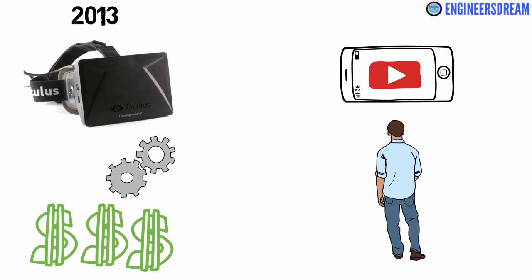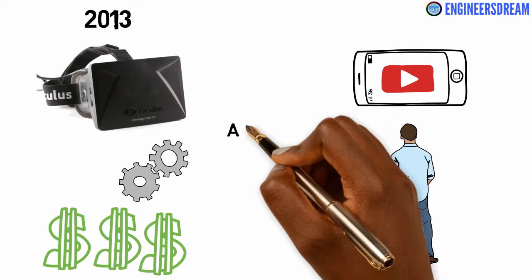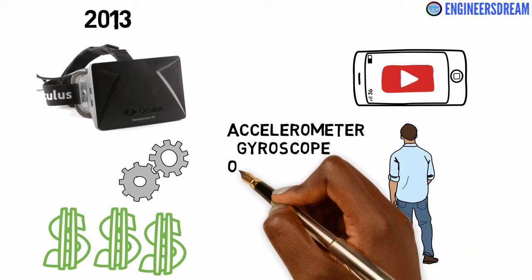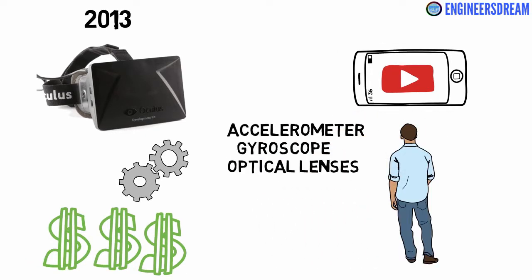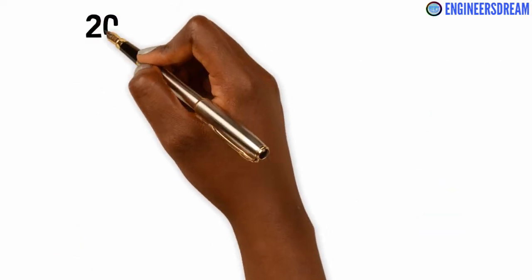The Oculus Rift consisted of sensors like the accelerometer, gyroscope, and optical lenses through which the user is immersed in a virtual world.